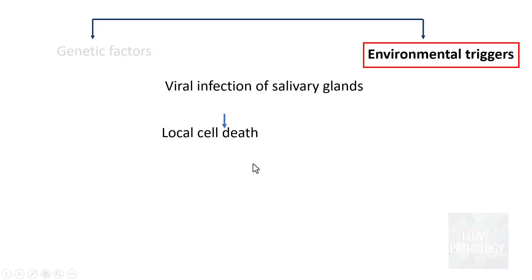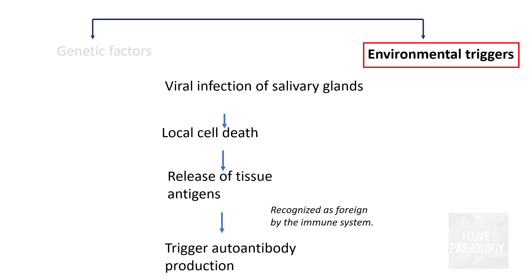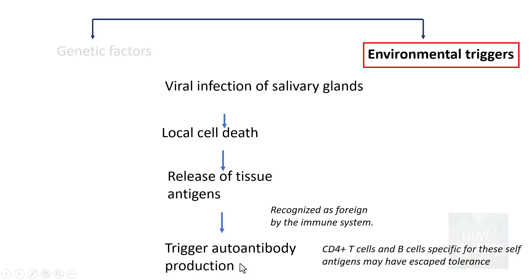Environmental triggers include viral infection of the salivary glands, which leads to death of the salivary glandular epithelial cells, releasing tissue antigens. The nuclei are exposed and recognized as foreign by the body's immune system. Once recognized as foreign, and because there is a failure of tolerance, this triggers autoantibody production by CD4-positive T cells and B cells specific for these cell antigens, which may have escaped the tolerance mechanisms.